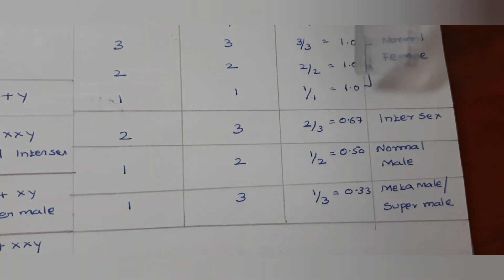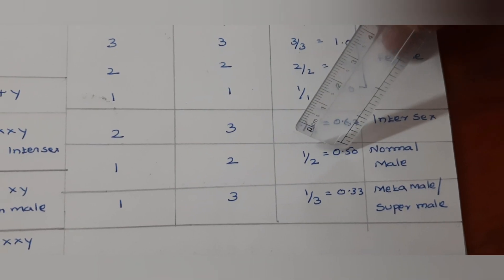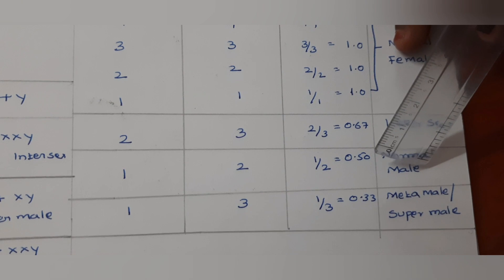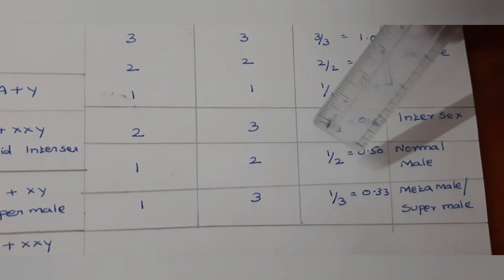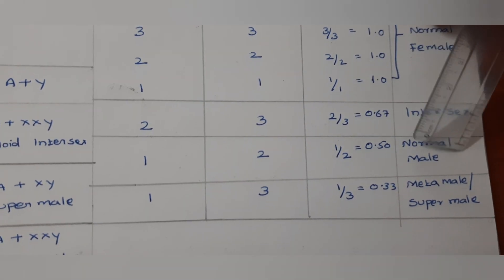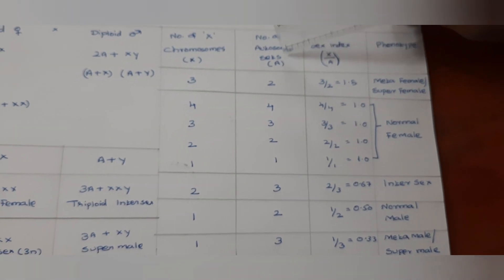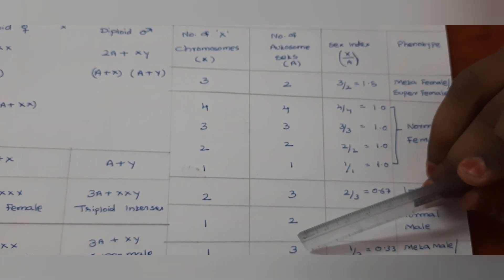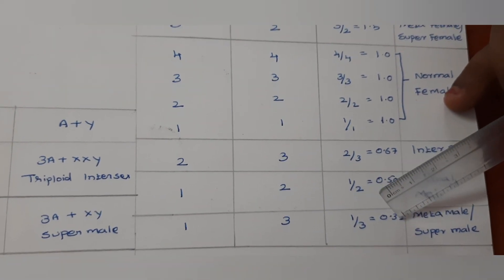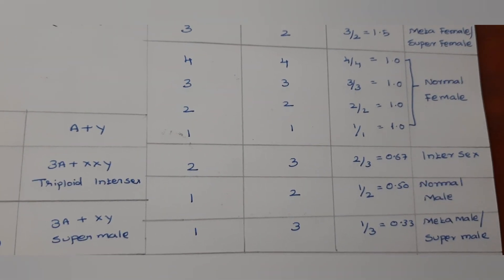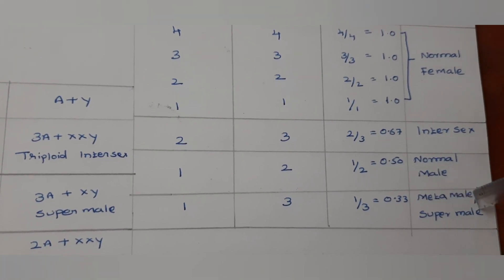When the sex index is exactly 0.5, that means 0.50 is normal male. X chromosome 1 and number of sets of autosomes 2, 1 by 2 equals 0.5, normal male. When the number of X chromosomes is 1 and number of autosome sets is 3, then sex index is 1 by 3, the value 0.33. The sex index value then the phenotype of Drosophila is metamale or super male.